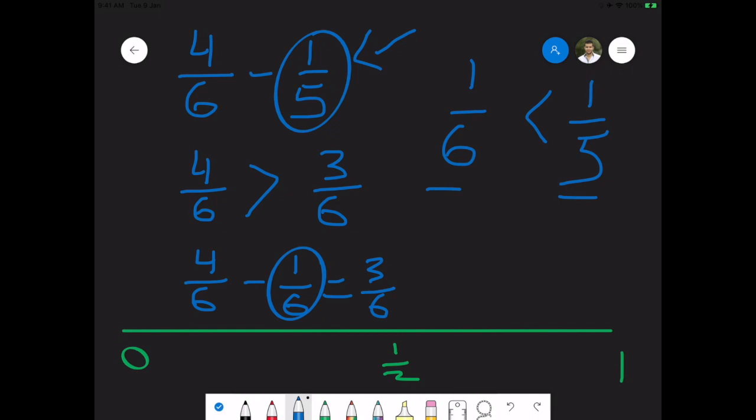It will be very, very close to 1 and a half because again, I need to subtract 1 6th from 4 6ths in order to get to a half.